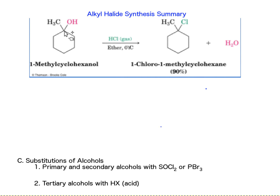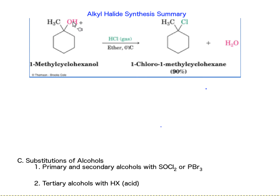We've got a tertiary alcohol here. Here's the alpha carbon — the one directly bound to the functional group — and it's tertiary. We're just going to add hydrochloric acid, and we get a nice substitution where the chlorine has substituted for the OH, and we have water as a secondary product.